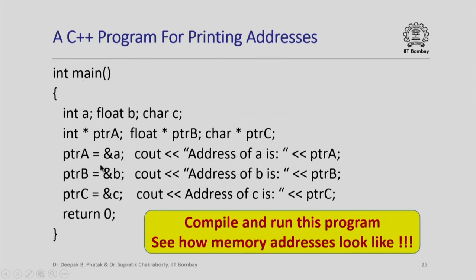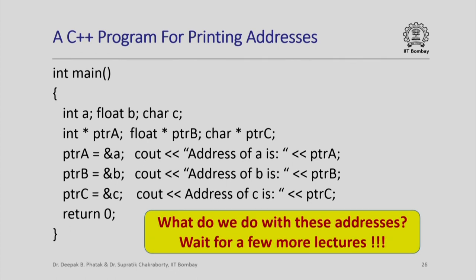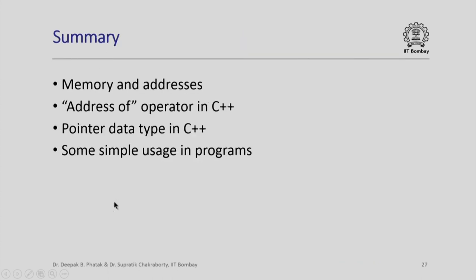To sum it all up, here is a simple C++ program for printing addresses. We have the same 3 variables as before, and 3 new pointer variables each of the appropriate pointer type. We take the addresses of the 3 variables, store them in the pointer variables, and print them out. Compile and run this program to see how memory addresses look. In summary, we looked at memory and addresses, the address-of operator in C++, the pointer data type, and some simple usage of pointer types in C++ programs.